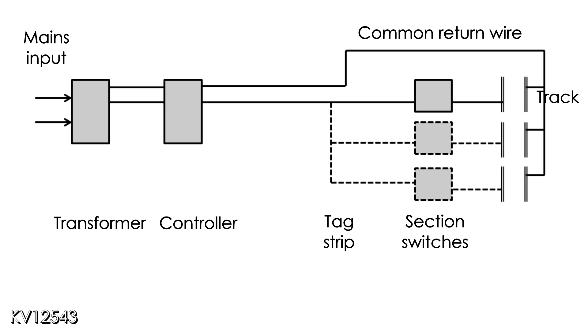Now there is only one wire into each section switch and one out to the track. It is always important to decide right from the start which rail is to be the common return rail and always stick to it.